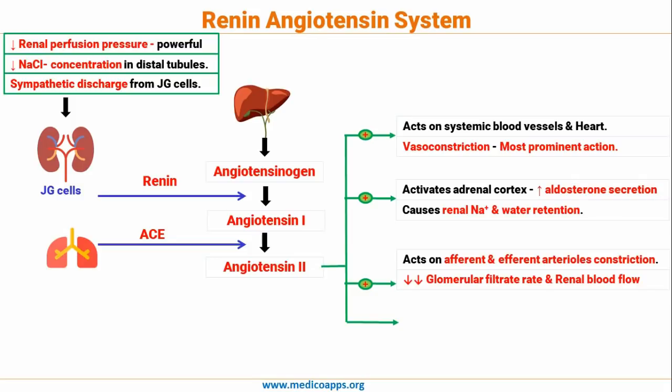Angiotensin 2 also acts on the afferent and efferent arterioles, causing constriction. Its effect on GFR is complex — some components of the renin-angiotensin system increase the GFR and some decrease it, but eventually there will be a slight reduction in GFR.